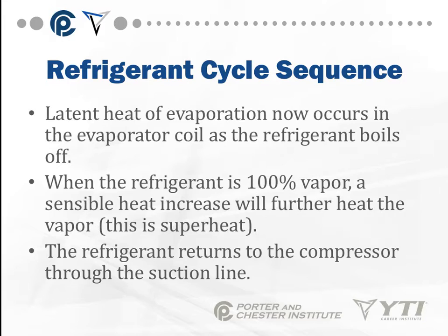As the refrigerant exits the metering device and moves into the evaporator coil, the latent heat of evaporation occurs. Remember, latent heat involves a change of state, and it is absorbed as the refrigerant boils off into a vapor. When the refrigerant is 100% vapor, a further sensible heat change occurs that increases the temperature of the vapor — this is called superheat. The superheated vapor then returns to the compressor through the suction line.